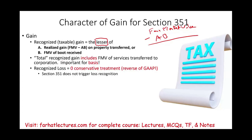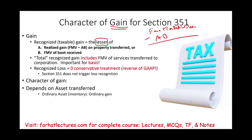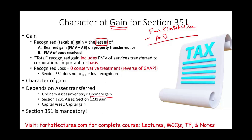The character of the gain depends on the asset being transferred. If you are transferring ordinary assets such as inventory, the gain is ordinary gain. If transferring a Section 1231 asset, the gain is Section 1231 gain. If transferring a capital asset, we will have a capital gain. Also note that Section 351 is mandatory — it's not optional.